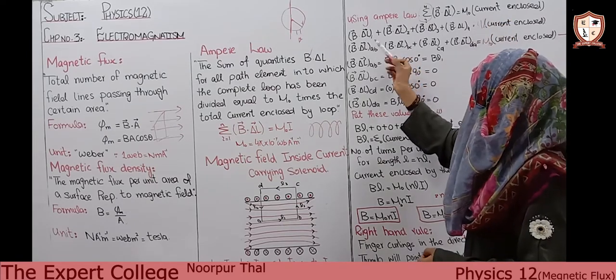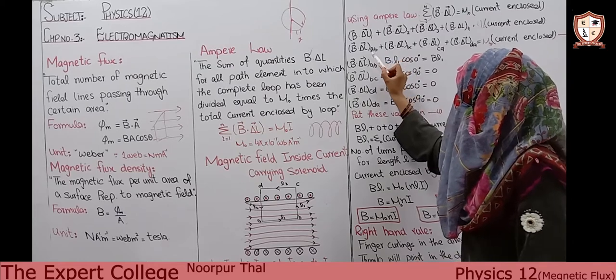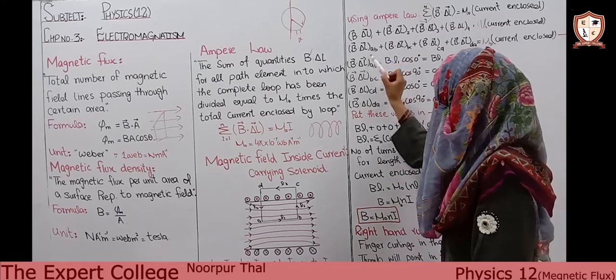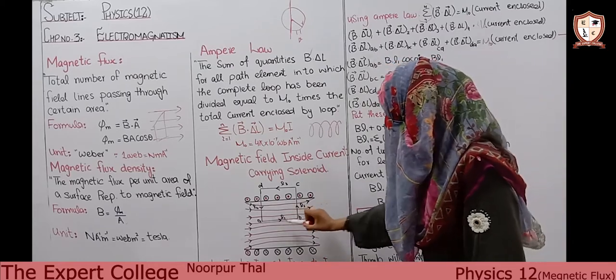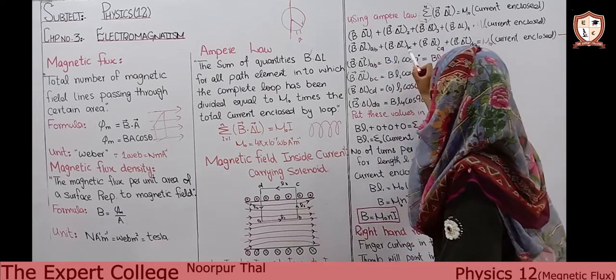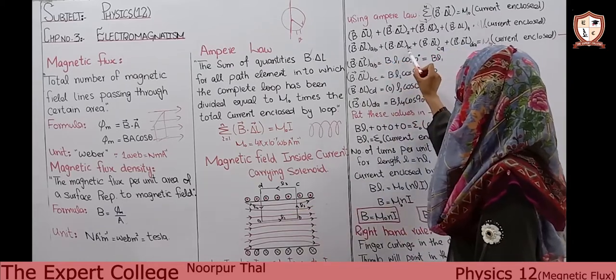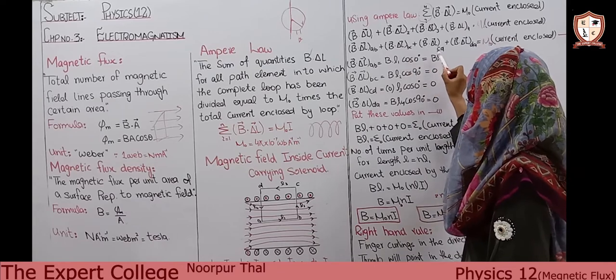We have four paths: first path A to B, second path B to C, third path C to D, and the fourth path D to A. This gives us: Σ B · ΔL = μ₀ × current enclosed — this is equation number one.